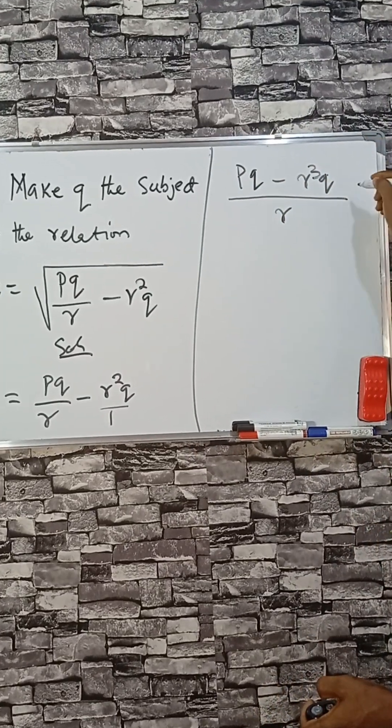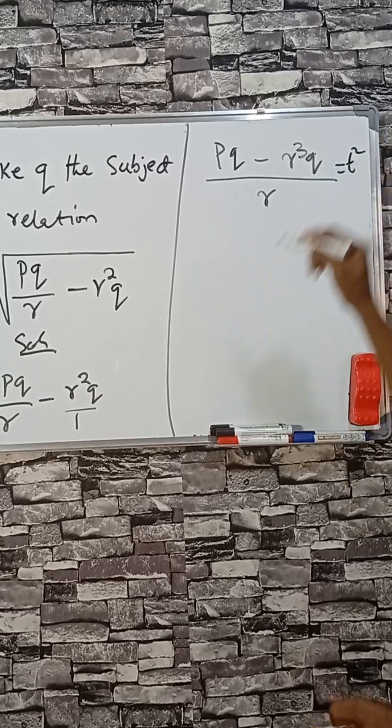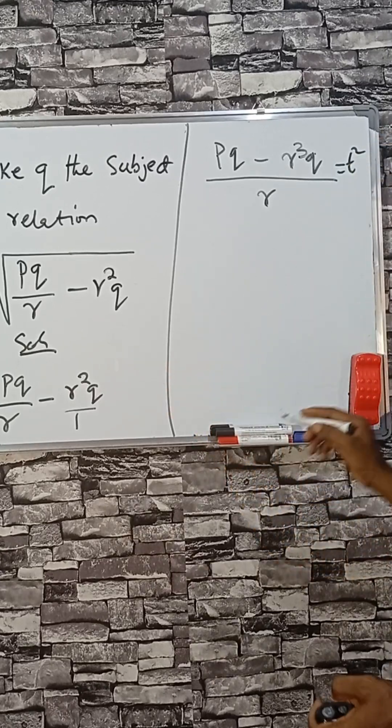q. And don't forget, c is equal to what? t squared. So if we cross multiply,